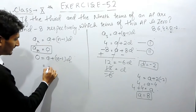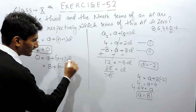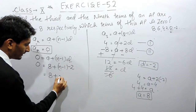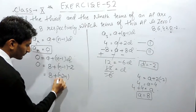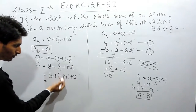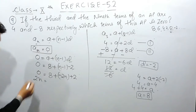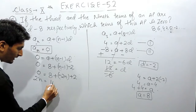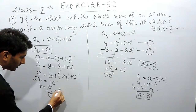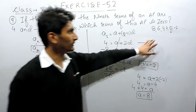We can verify this algebraically by substituting the values of a and d into the formula: 0 equals 8 plus n minus 1 into minus 2. Expanding: 0 equals 8 minus 2n plus 2, so 0 equals 10 minus 2n, giving 2n equals 10, and therefore n equals 5. The 5th term is 0, the same result we found by listing the AP.